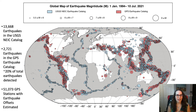2,721 of these earthquakes were recorded by at least one GPS station, meaning approximately 20% of earthquakes worldwide were detected by GPS. 51,073 offsets were estimated for these events.